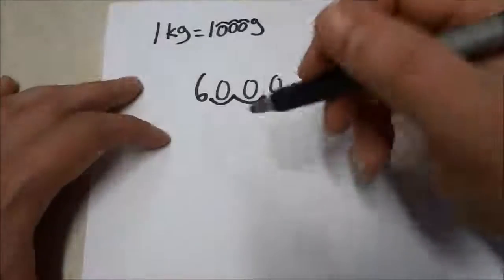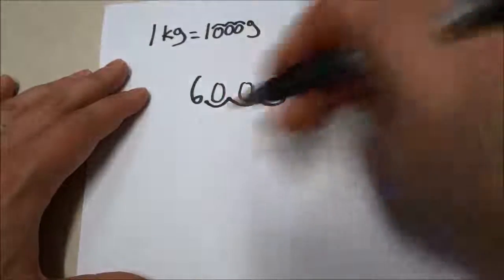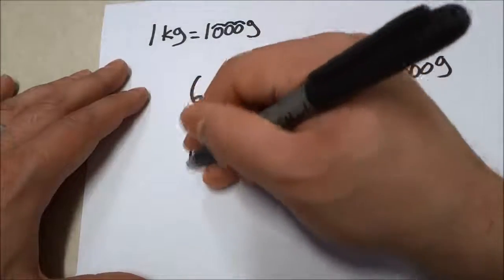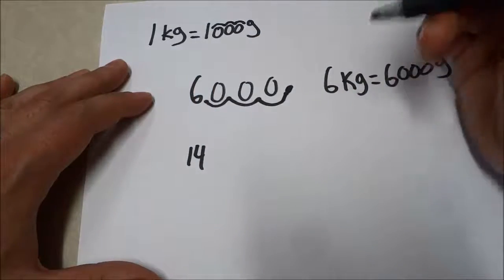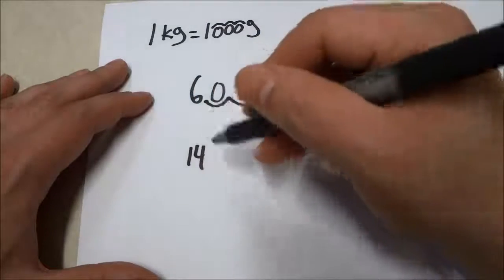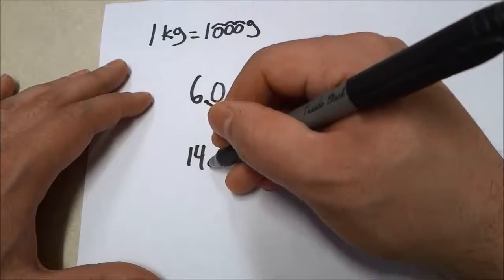Now let's do the same thing with another example. Let's take a number like 14. So if we had 14 kilograms and I wanted to convert it to grams, I would simply do the same thing. I would take the imaginary decimal.